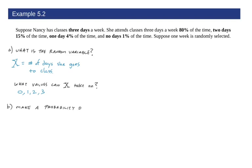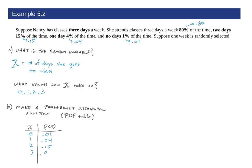So let's make the probability distribution function here. So our PDF table. And so we're going to have all the values X could take on. And then we're going to have the probabilities associated with them. So again, 80%, 15%, 4%, and 1%. And we're going to write that as a decimal. And it should add up to one whole.